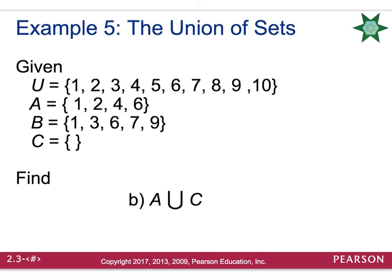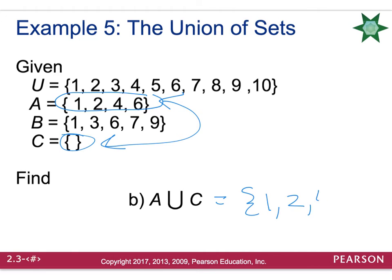Let's try the union of A and C. A has the items {1, 2, 4, 6} and C is the empty set. If we unite these two together, the union will only have what set A has, since C has nothing additional to bring to the table.